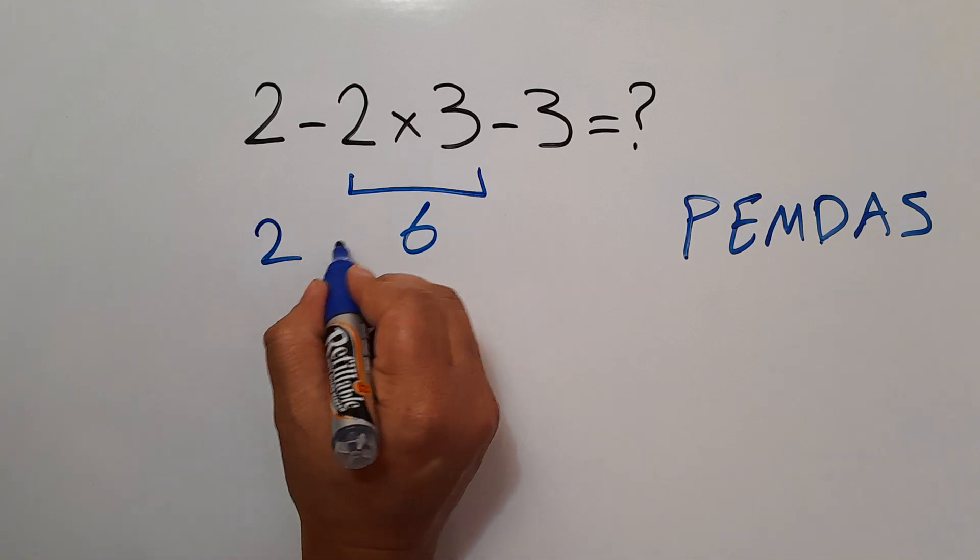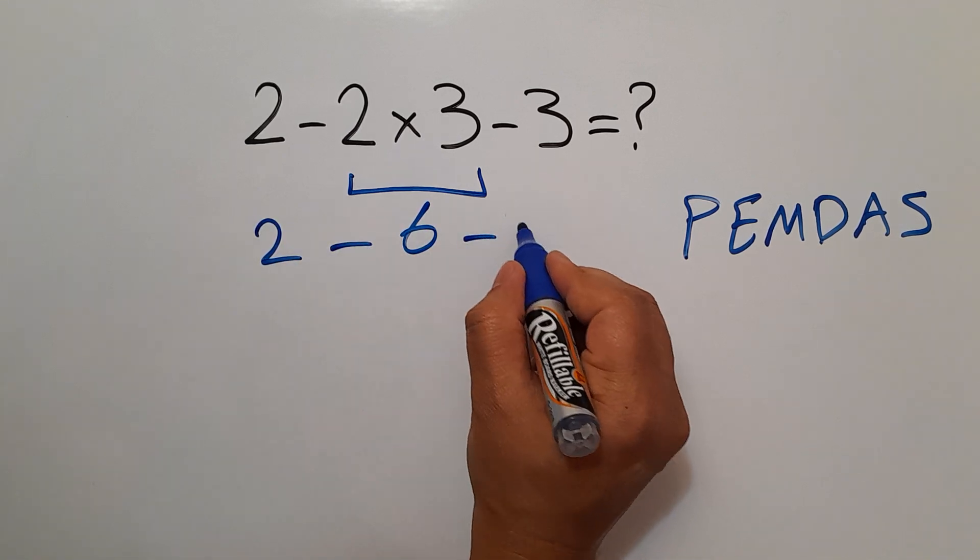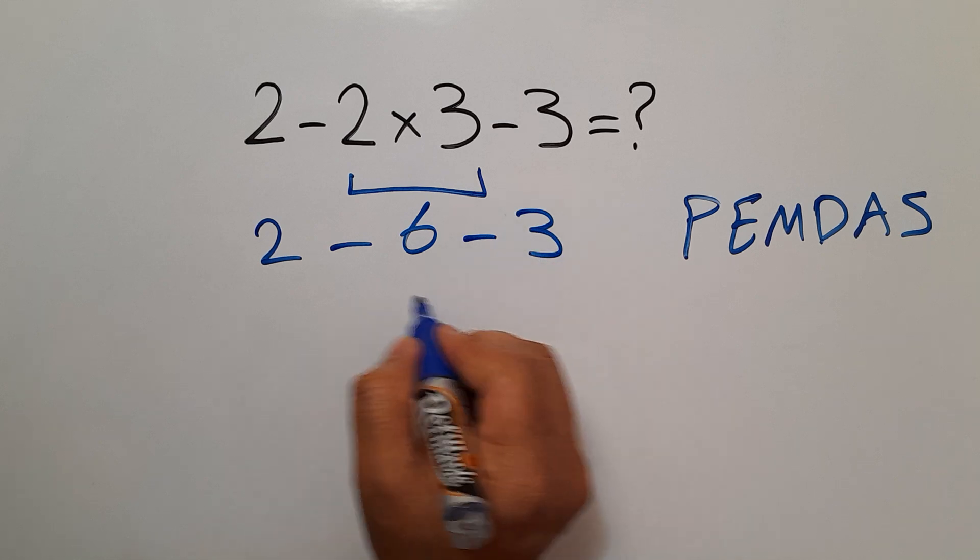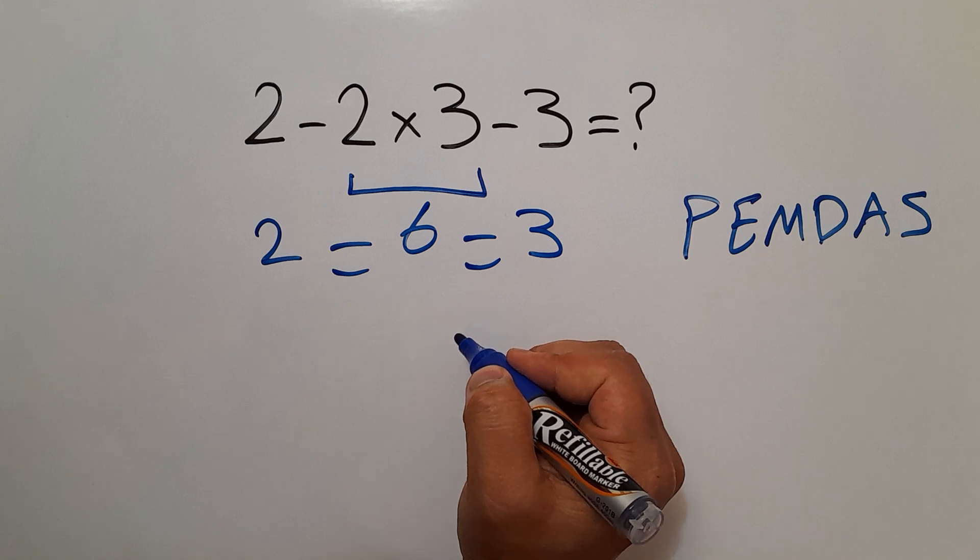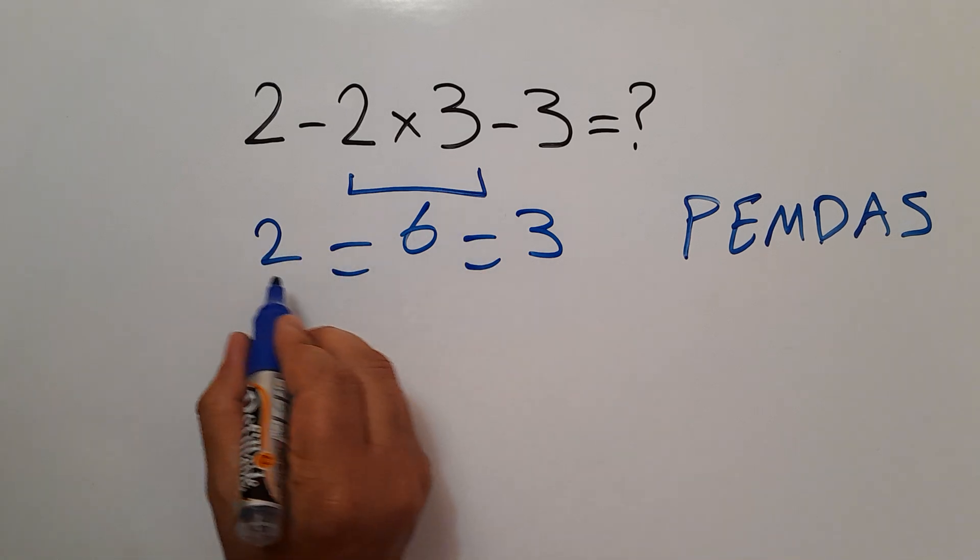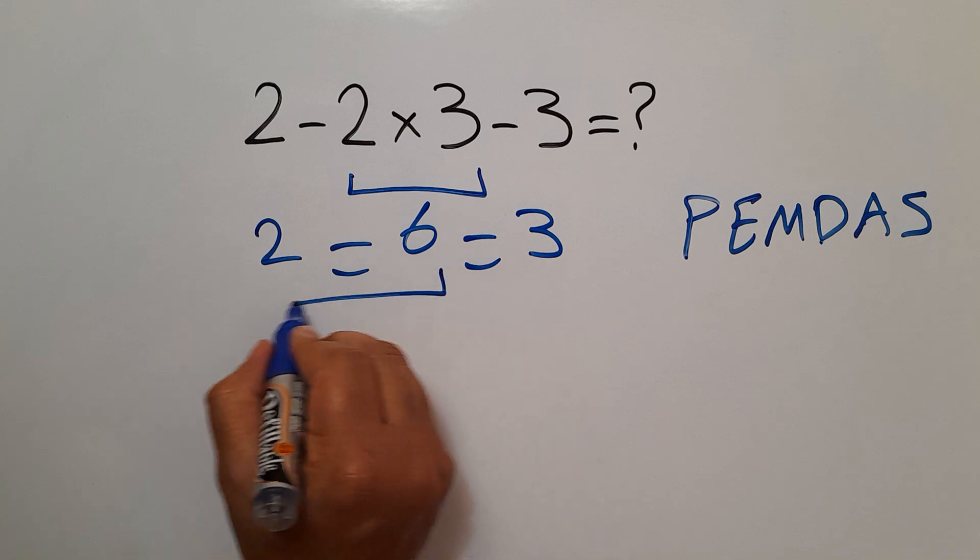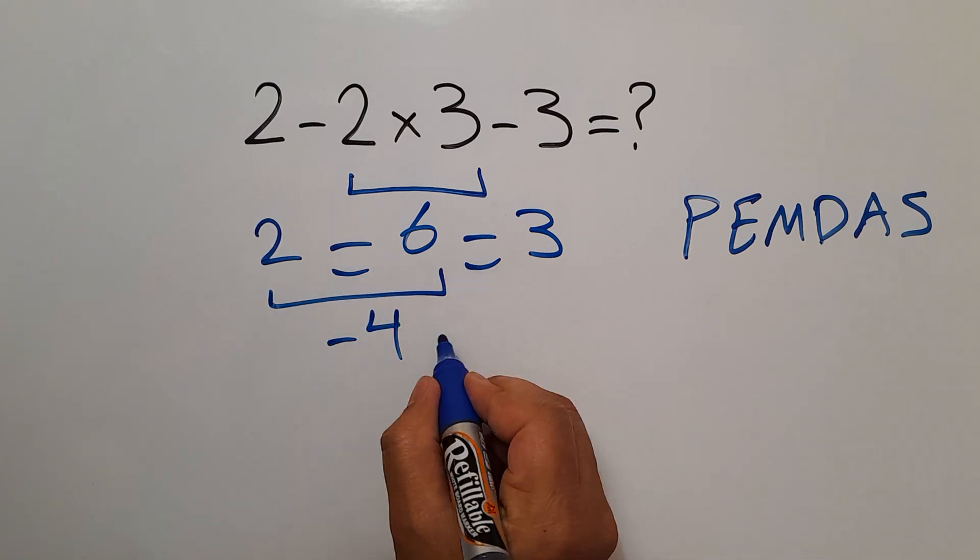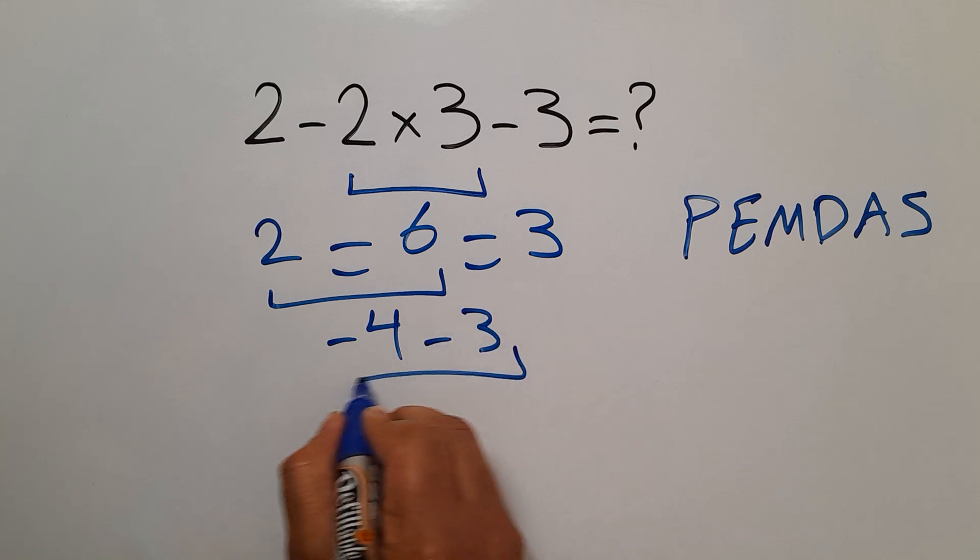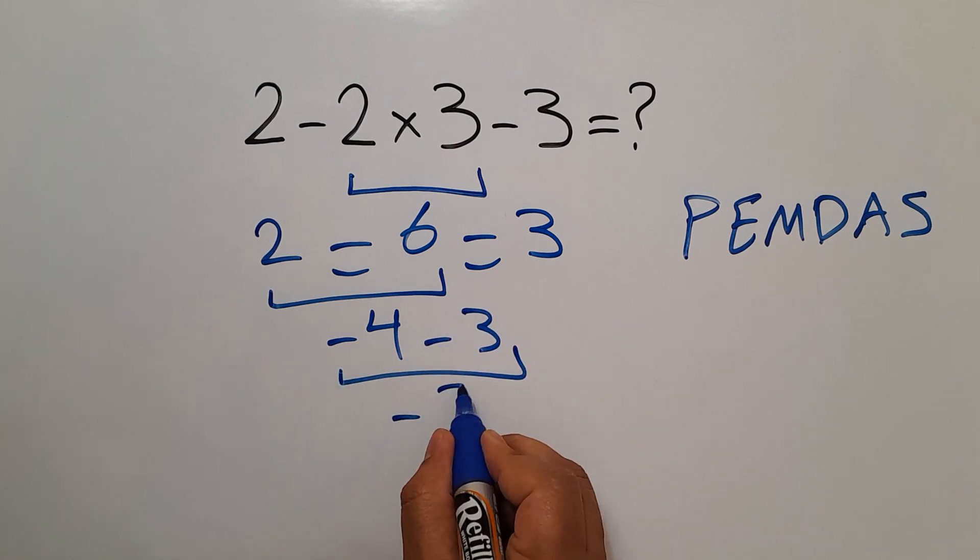So 2 minus 6 minus 3. Here we have these two subtractions and we have to work from left to right. So 2 minus 6 equals negative 4, and negative 4 minus 3 gives us negative 7.